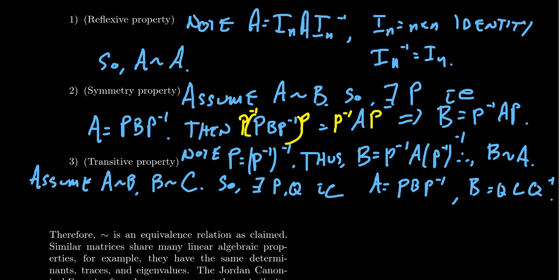We want to show that A is similar to C, so there has to be some non-singular matrix which when multiplied by C appropriately gives us A. In this example, we used the identity matrix for the reflexive property and matrix inverses for the symmetric property. How do we do the transitive property? We have to put these together somehow. Well, B equals B — we could substitute this inside here.